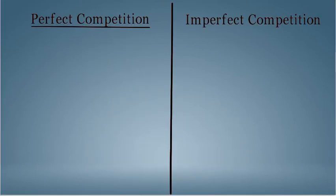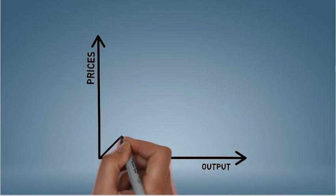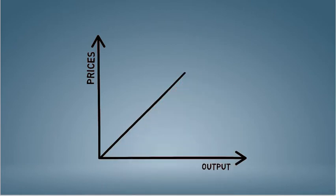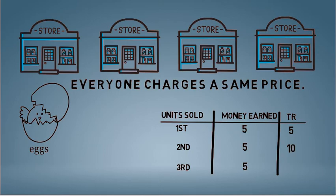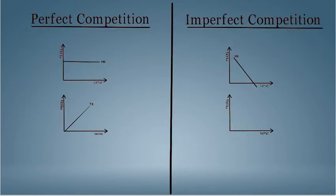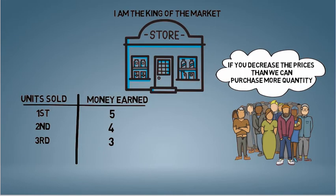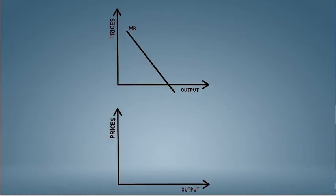In perfect competition, your total revenue curve will end up going up constantly. This is because you constantly keep earning revenue with every additional unit you sell. However, in imperfect competition, your total revenue will only rise till the time you are earning something from the additional unit you are selling. After you stop earning, your total revenue will start falling. Notice how total revenue starts falling exactly when the marginal revenue curve hits zero.